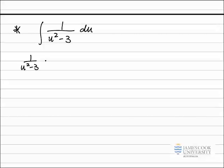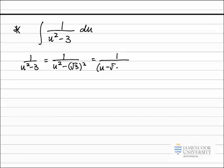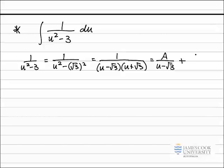I want to set this up as partial fractions. Dealing with the integrand: u squared minus 3, I'm writing that as a difference of two squares — u squared minus the square root of 3 all squared. So now I have the difference of two squares, which I know factorizes. The two factors will be u minus root 3 and u plus root 3. Now I've got two linear factors on the bottom, and I want to set this up in partial fractions: A over u minus root 3, plus B over u plus root 3.